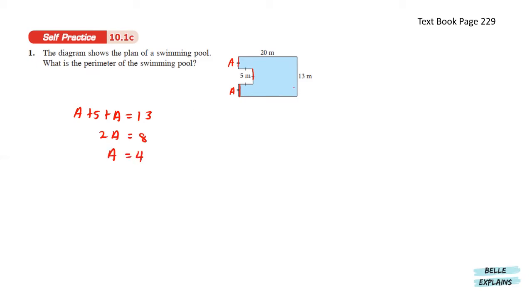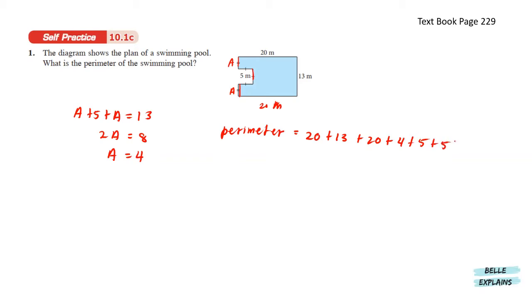The bottom length here is the same as the top, which means it is also 20 meters. Now that we know all the lengths, we can find the perimeter. The perimeter equals to 20 plus 13 plus 20 plus 4 plus 5 plus 5 plus 5 plus 4. This will give us the perimeter at 76 meters.